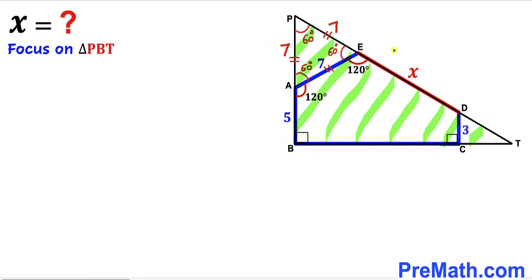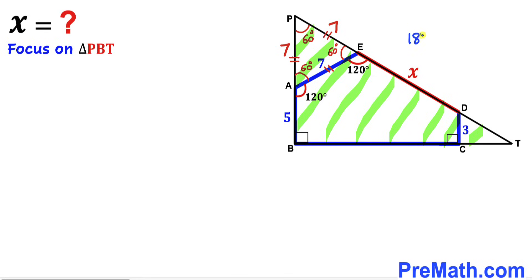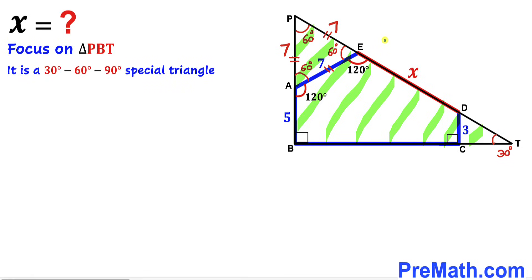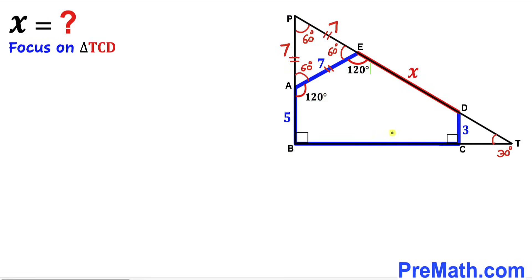Now let's focus on the big right triangle PBT. Angle P is 60 degrees, angle T is 90 degrees, and since the sum of interior angles is 180 degrees, angle B must be 30 degrees. Therefore triangle PBT is a 30-60-90 special triangle.